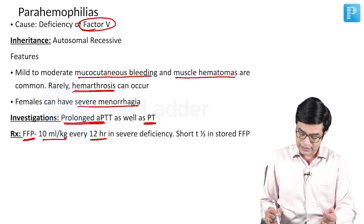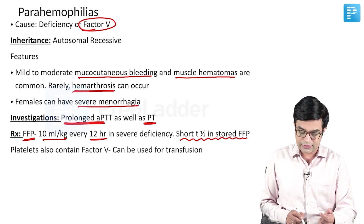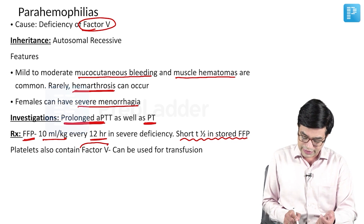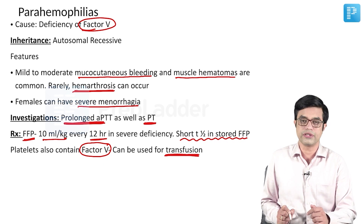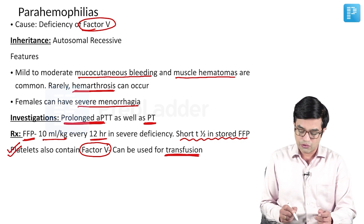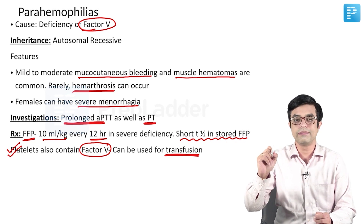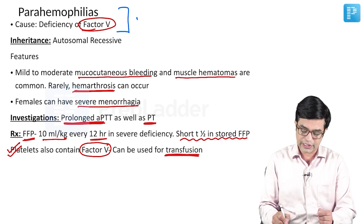The problem with parahemophilia is that factor V has a short half-life in stored FFP. When FFP is not available, you can use platelet concentrate because platelets also contain factor V. This is an important MCQ point: which coagulation disorder can also respond to platelet transfusion? The answer is parahemophilia, or factor V deficiency.